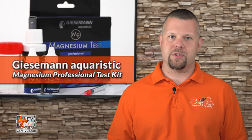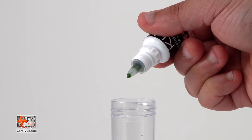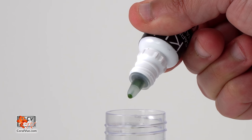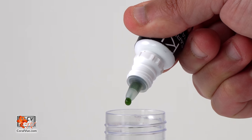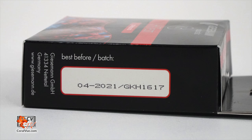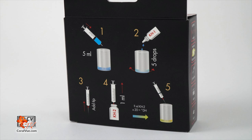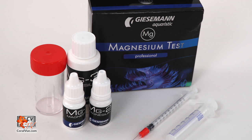All Giesemann test kits feature calibrated droppers to ensure that every drop administered is exactly the same. You can do one, two, three, four times a test and the results will be the same. All test kits feature a clearly printed expiration date and lot number. All Giesemann test kits include multi-language illustrated instructions and professionally calibrated color charts. The Giesemann magnesium test kit offers an uncomplicated, fast, and precise measurement of magnesium concentration in salt water aquariums.